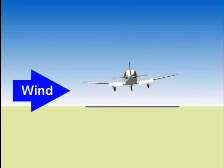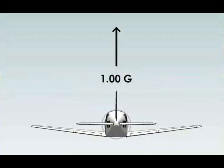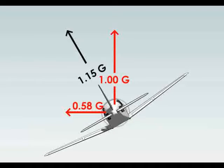First, you bank the airplane to the left. Now you can see from this diagram that lift is perpendicular to the wings. So when you bank to the left, lift is now pulling you to the side as well as lifting the airplane up. This will cause the airplane to start sliding sideways to the left.